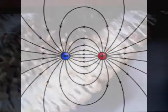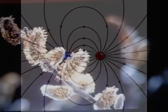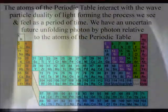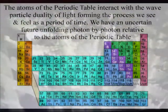At everyday temperatures, we have the future unfolding with each photon vibration only occurring once, forming an uncertain future relative to the atoms of the periodic table.